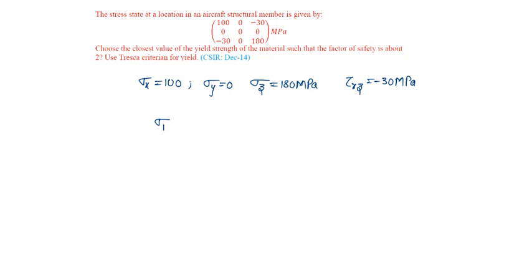The principal stresses sigma 1 and 2 will be sigma x plus sigma z by 2 plus or minus under root of sigma x minus sigma z by 2 square plus tau xz square that is minus 30 square under root.